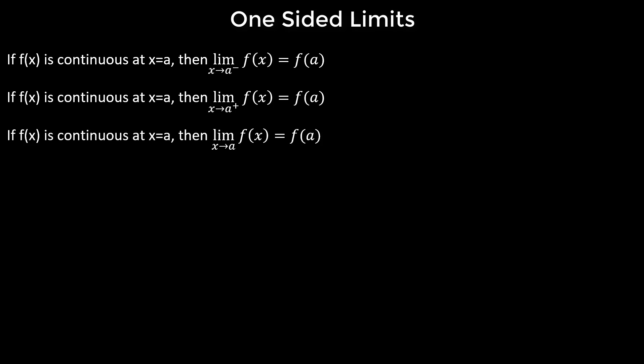then the limit as x approaches a plus or minus equals the function evaluated at a. The reasoning should make a lot of sense: if the function is continuous, there aren't going to be any jump discontinuities, no holes, nothing like that. The function is smooth, it will have a value, and because the graph won't jump or discontinue, the limit as x approaches a minus or plus equals f(a).